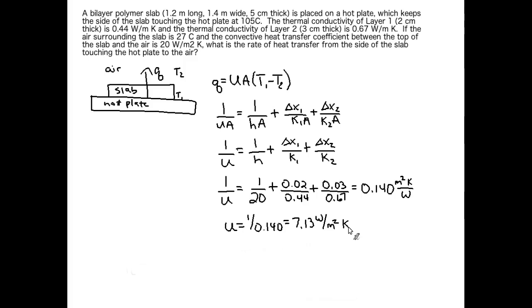Now we can take U and plug it into our original equation for Q up here. We've got our area, we can solve for it. It's the length times the width, remember? And then we've got our two temperatures. So T1 is the side of the slab touching the hot plate. T2 is the air temperature, 27 C. So let's plug everything in and solve.